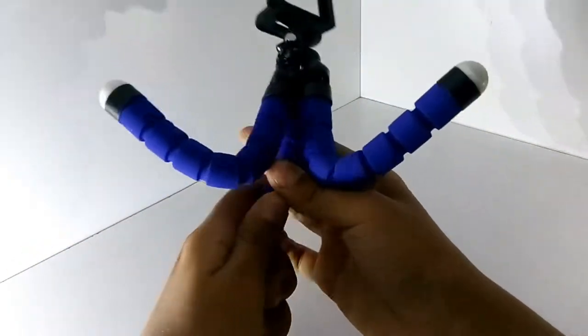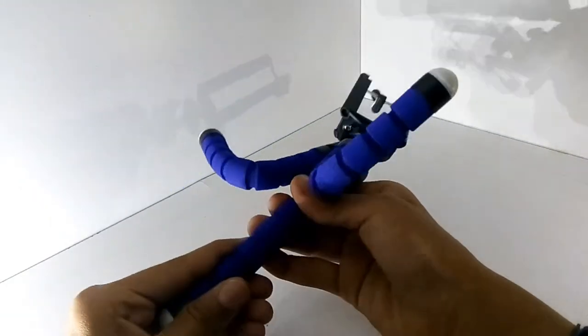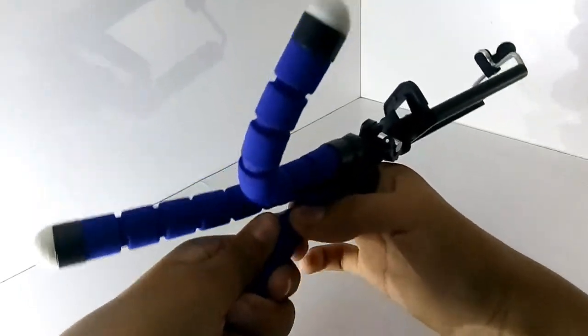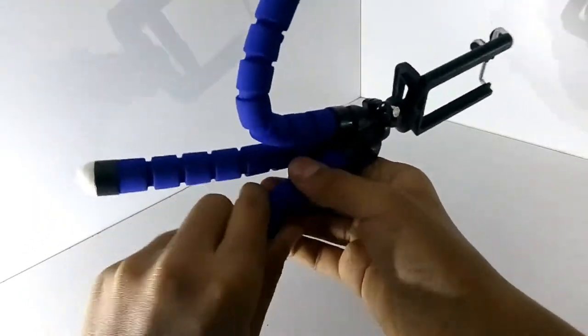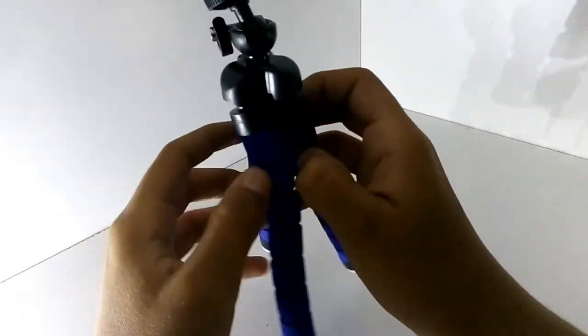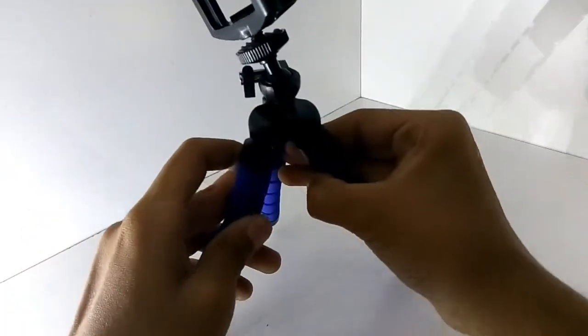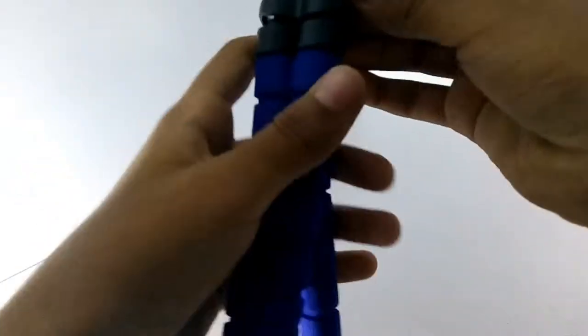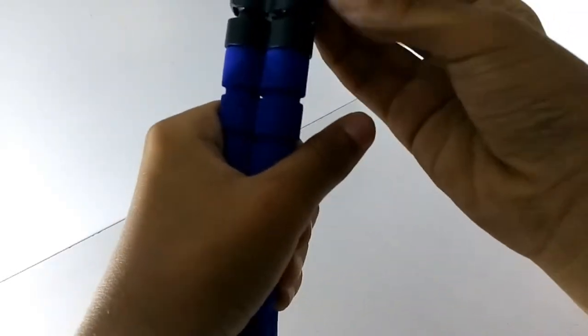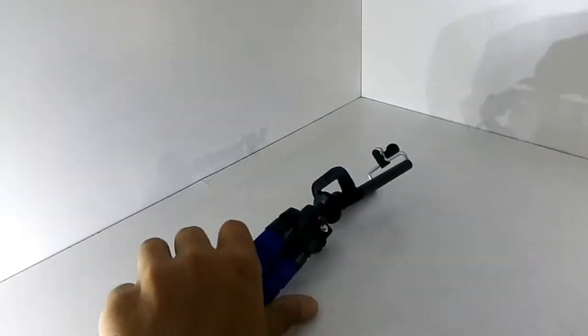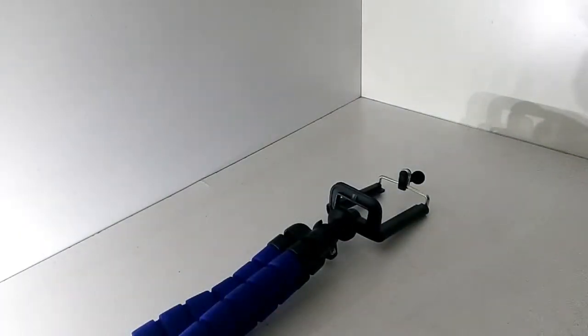This tripod is pretty nice for your YouTube videos. This cost me around 400 rupees, so that's a nice thing. Sorry for my voice. You can keep it like this, and this is a 360 ball holder, means you can have 360-degree rotation. I will show you by placing my mobile in it.